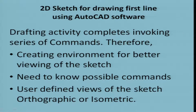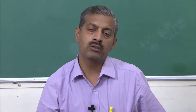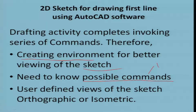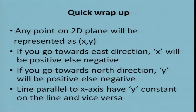For drawing the first line using AutoCAD, the drafting activity involves invoking a series of commands. We need to know about creating the environment for better viewing of the sketch, the possible commands we will use — draw commands as well as modify commands if required — and how to inform the software about our requirement for sketching orthographic as well as isometric drawings.